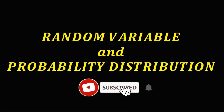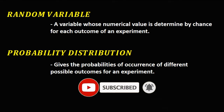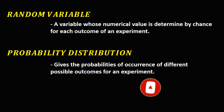A random variable is a variable whose numerical value is determined by chance for its outcome of an experiment. A probability distribution gives the probabilities of occurrence of different possible outcomes for an experiment.